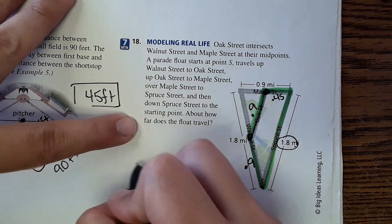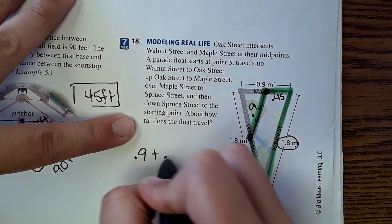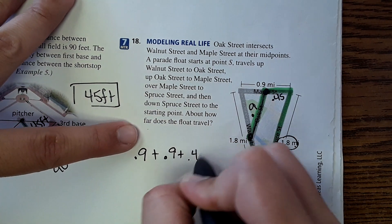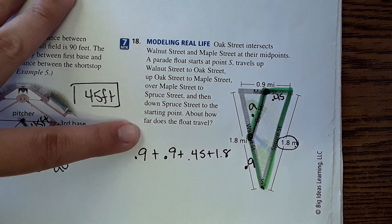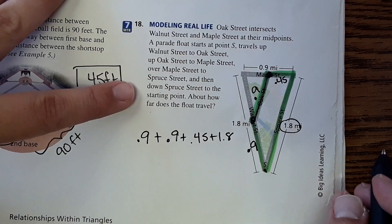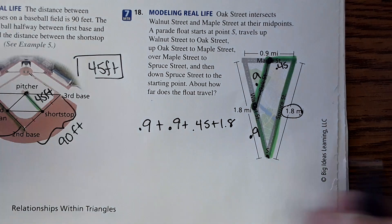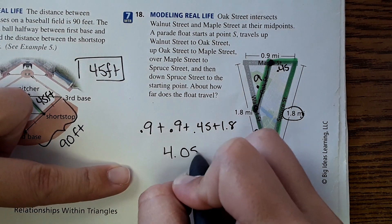And then we can add those values together. So 0.9 plus 0.9 plus 0.45 plus 1.8 - if you plug that into a calculator, then you would get 4.05 miles. And that's it.